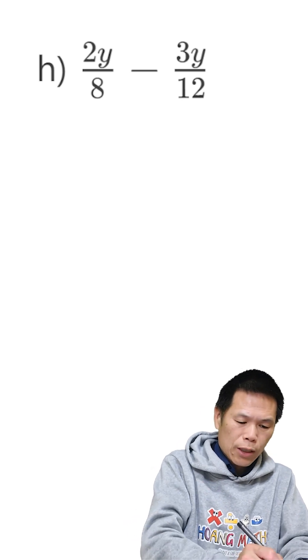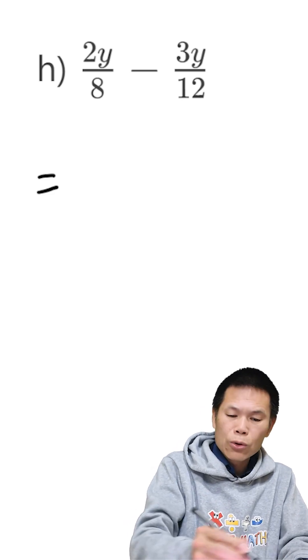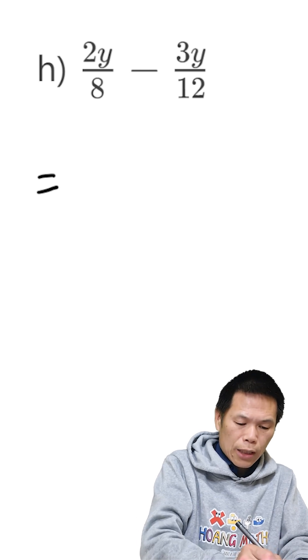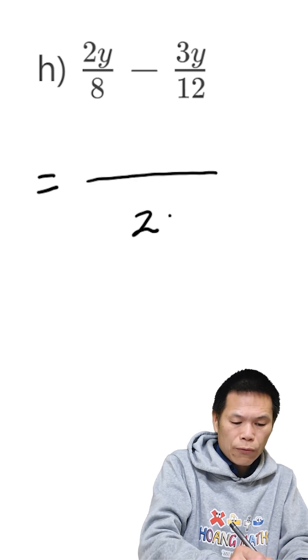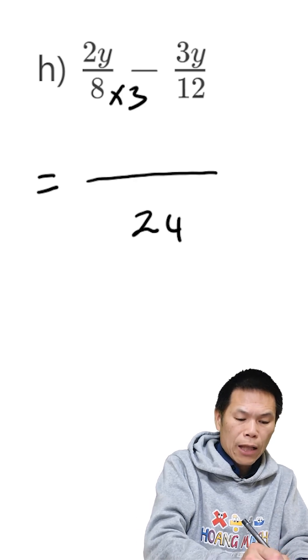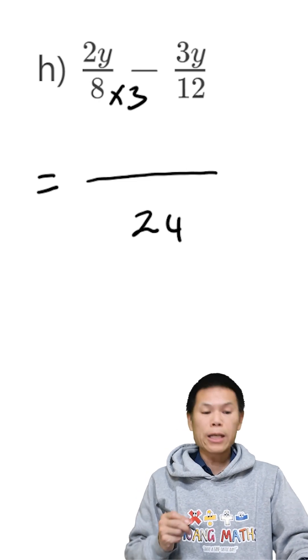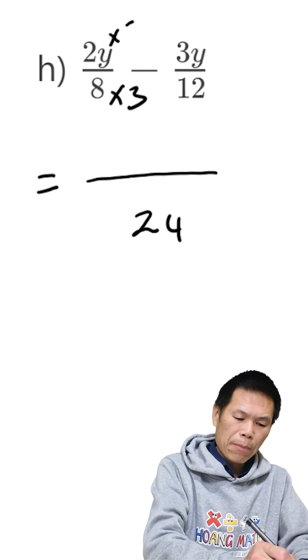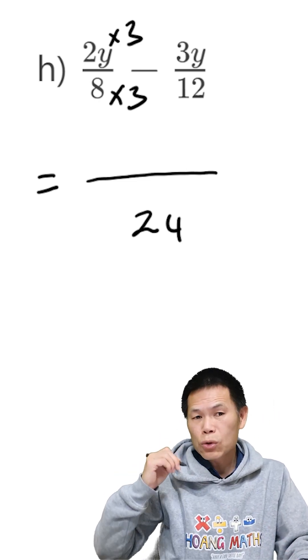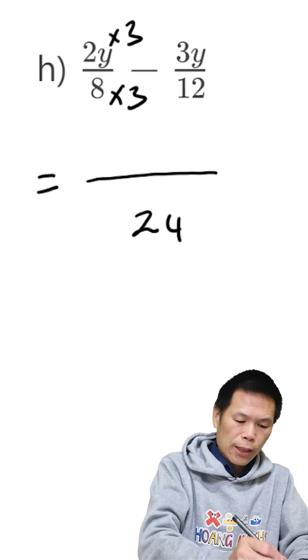So let me just write this down. That is equal to... let me clear this first. So that is 24. We times this by 3 because 8 times 3 is 24. So this must times by 3. So 2 times 3 is 6. So 6y.